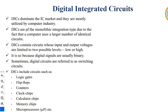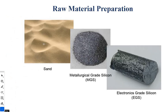Digital integrated circuits are mostly used in computer industries. They include circuits like logic gates, flip-flops, counters, clock chips, calculators, memory chips, microprocessors, etc. The raw materials used for preparation of ICs are sand, silicon, metallurgical grade silicon MGS, and electronics grade silicon EGS. These are the introductory topics for ICs. Thank you.